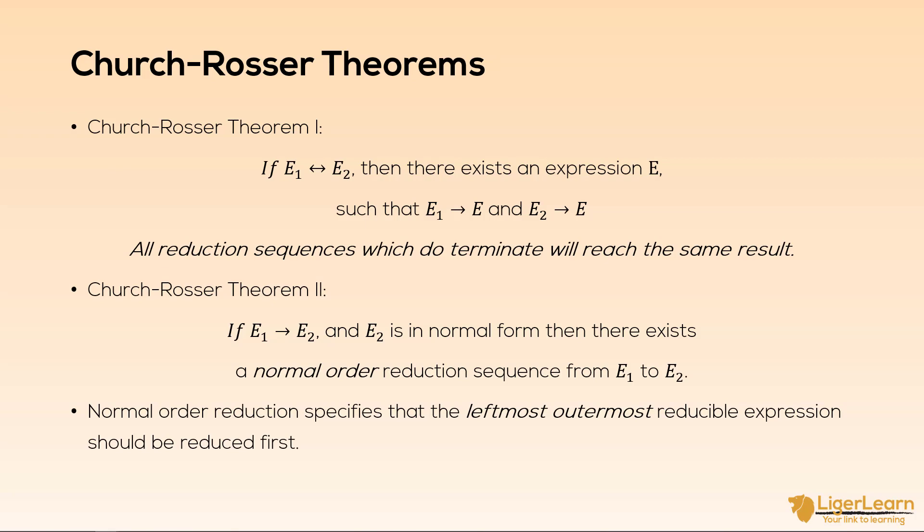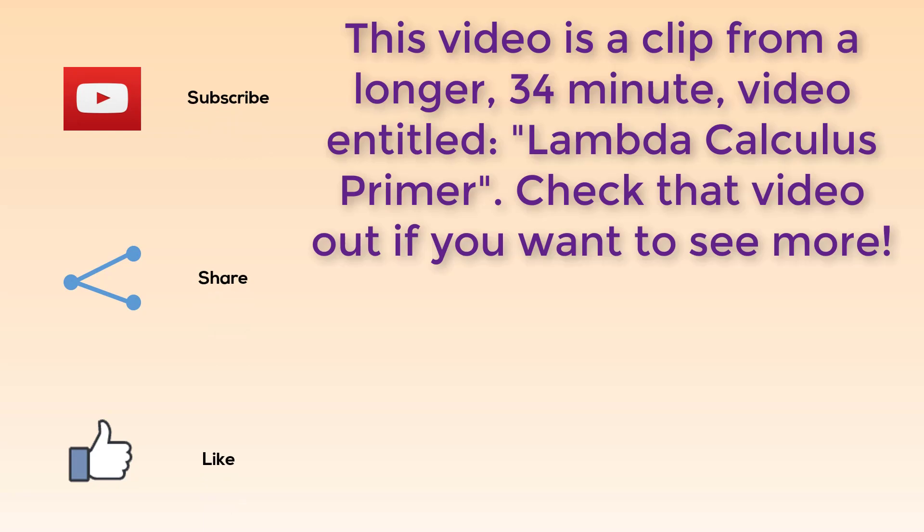I've just covered these theorems for completeness. You won't really be using them at all when you start writing functional programming code. The key thing I wanted you to see was on the previous slide, where we saw that normal order reduction allows for lazy evaluation. That is, only evaluating the bare minimum to reach normal form. This video is a clip from a longer video where we explore the lambda calculus even further. Check that out if you want to see more. See you next time.